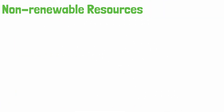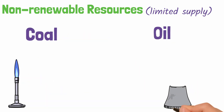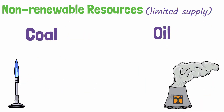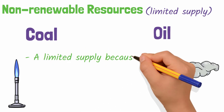Non-renewable resources refer to energy resources that have a limited supply — that is, they will run out. These include coal, oil, natural gas, and nuclear power. The reason these resources have a limited supply, or a finite supply, is that they take a long time to produce.